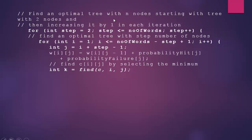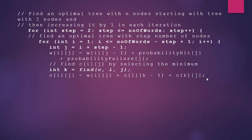Back in the optimal function, the returned l is assigned to k. Then C[i][j] = W[i][j] + C[i][k-1] + C[k][j]. This is the core formula — I recommend working through it with pen and paper from a textbook to fully understand it. Finally, R[i][j] = k. The R array values are our actual answer — they tell us which node to place where.